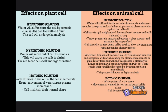In a hypertonic solution, water will diffuse out of the vacuoles by osmosis, and the vacuoles and cytoplasm will shrink, causing the plasma membrane to be pulled away from the cell wall. This process is called plasmolysis. Leaves and stems will bend and wilt, but they can regain their turgidity if returned to a hypotonic solution immediately. This reverse process is known as deplasmolysis.